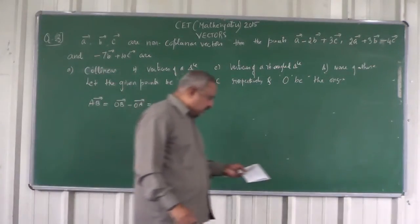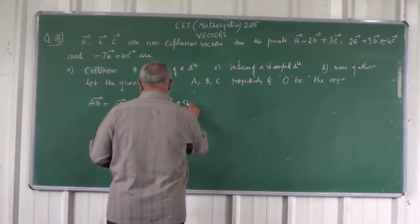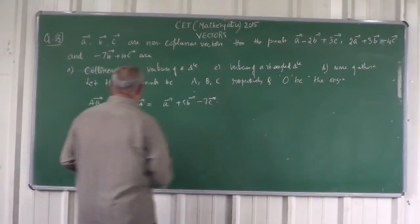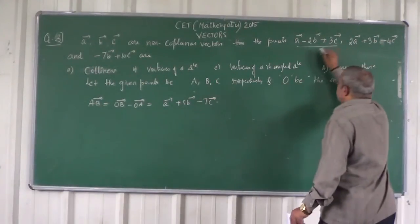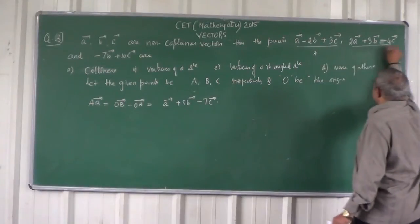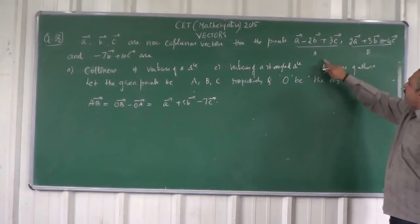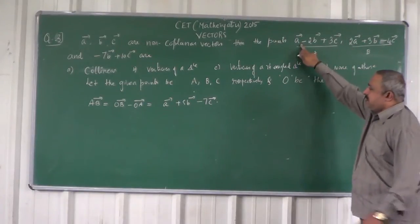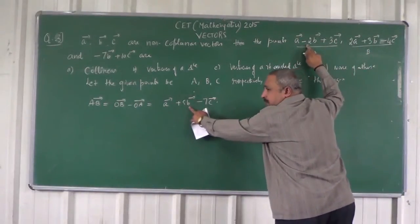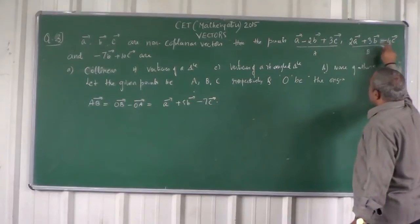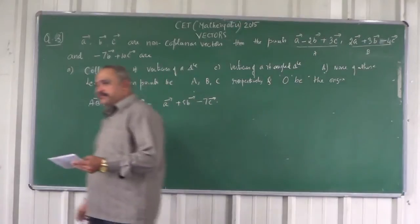Now, vector AB = OB minus OA. Here A is (A), B is (2A + 3B - 4C), so OB minus OA gives: 2A minus A = A, 3B minus (-2B) = plus 5B, and -4C minus 3C = minus 7C. So vector AB = A + 5B - 7C.